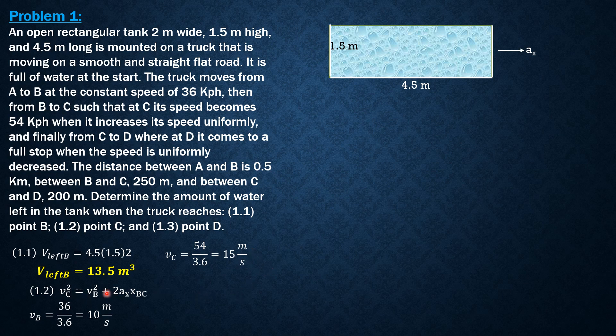Substituting into this equation, 15^2 = 10^2 + 2a_x(250 meters), the distance between B and C. So a_x is equal to 0.25 meters per second squared, positive because the speed is uniformly increased between B and C.